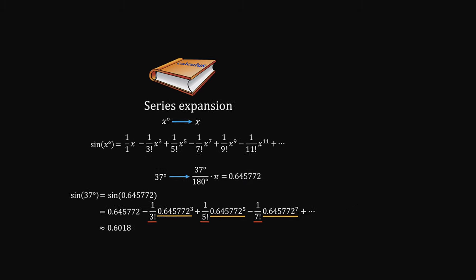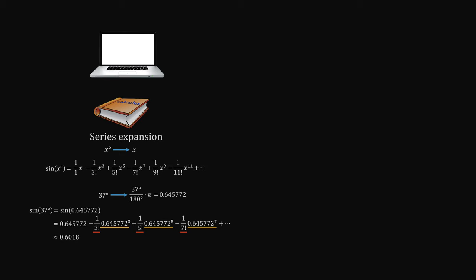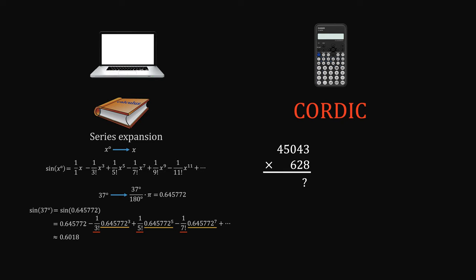This method is not a big deal on a computer. But for simple calculators, computing resources are scarce, so people developed a CORDIC algorithm to reduce the computing work. In a nutshell, although multiplications are complex, there is always a simplest one, that is, multiply by the base number.